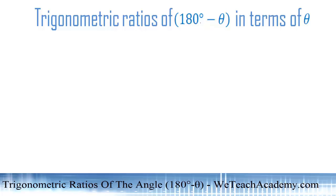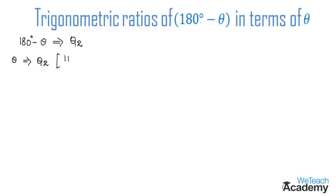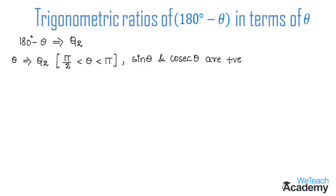Welcome to vteachacademy.com. Today's topic is trigonometric ratios of 180 degrees minus theta in terms of theta. We already know that 180 degrees minus theta lies in the second quadrant, where the angle ranges between 90 degrees and 180 degrees. In the second quadrant, only sine and its reciprocal cosecant are positive, and the rest of the ratios are negative.